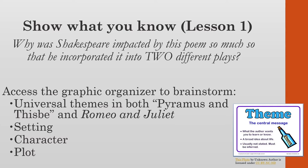The real question is understanding the impact one story can have on a writer. Ovid so impacted Shakespeare that he wrote not one but two different plays incorporating Pyramus and Thisbe. So what messages did Shakespeare absorb that influenced him so much? Access the graphic organizer to brainstorm some ideas about universal themes in both Pyramus and Thisbe and Romeo and Juliet. You will also take some notes on setting, character, and plot.